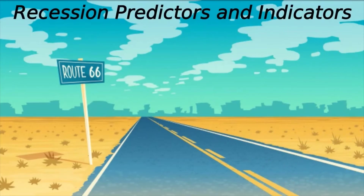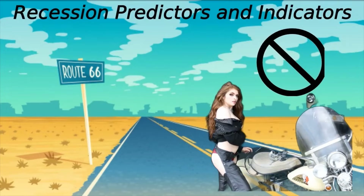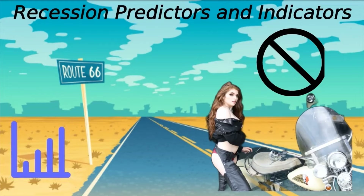Recession predictors and indicators: there is no single way to predict how and when a recession will occur. Aside from two consecutive quarters of GDP decline, economists assess several metrics to determine whether a recession is imminent or already taking place. According to many economists, there are generally accepted predictors that, when they occur together, may point to a possible recession. First are leading indicators that historically show changes in their trends and growth rates before corresponding shifts in macroeconomic trends.